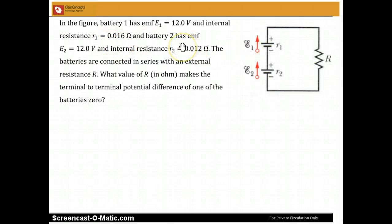So in this figure, battery 1 has an EMF E1 equals 12.0 volts, internal resistance R1 is 0.016 ohms, and battery 2 has an EMF E2 equals 12.0 volts and internal resistance R2 equals 0.012 ohms. The batteries are connected as shown in series, and there is an external resistance R also.